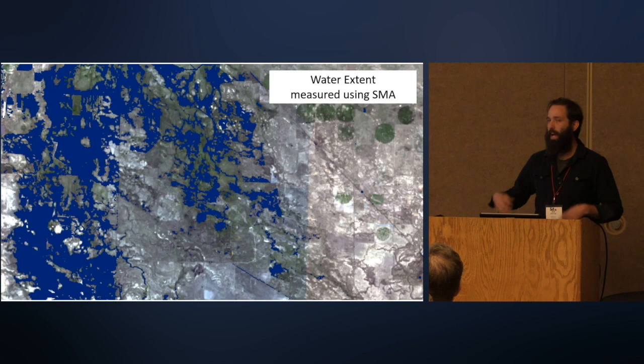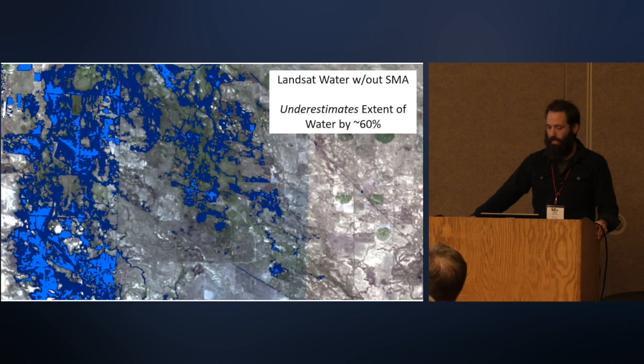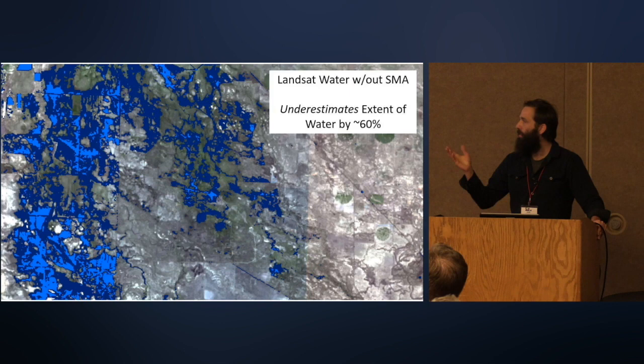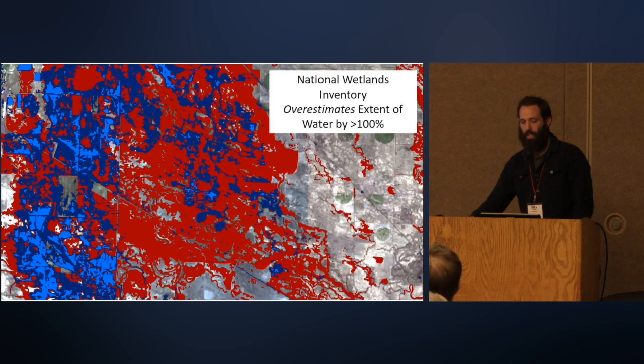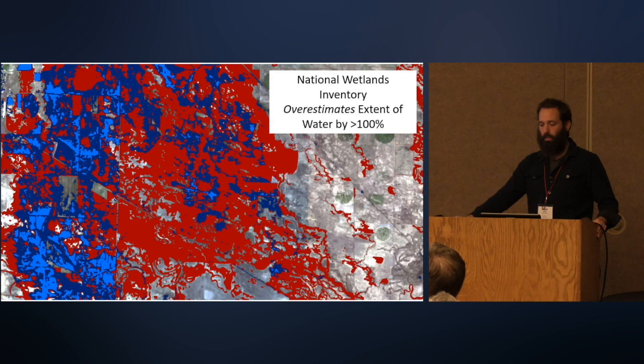To put this in context, the light blue shown here is water detected from Landsat without the spectral mixture analysis — you can see that underestimates these areas by about 60 percent. On the other hand, the National Wetlands Inventory (NWI), which is inherently inclusive and talks more about the potential for water on the landscape, overestimates water by twofold in this landscape.